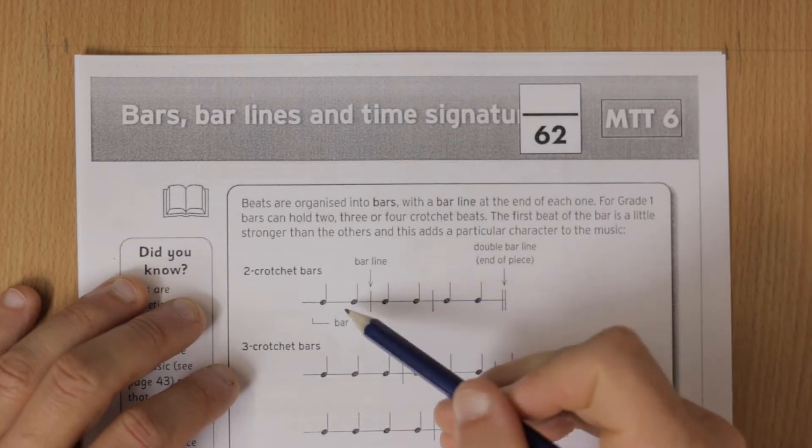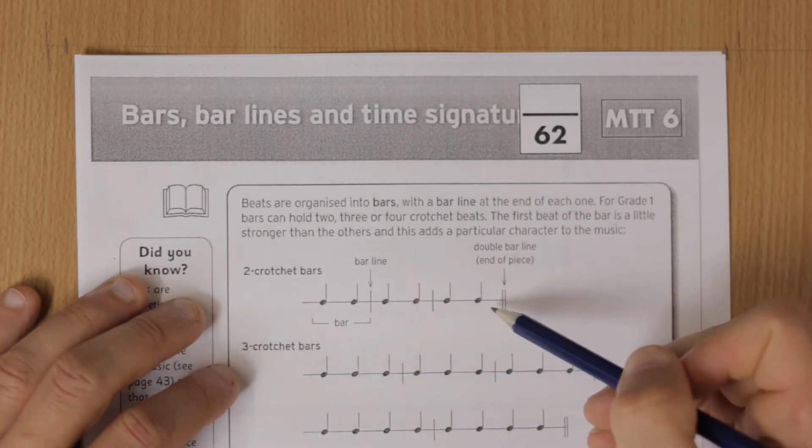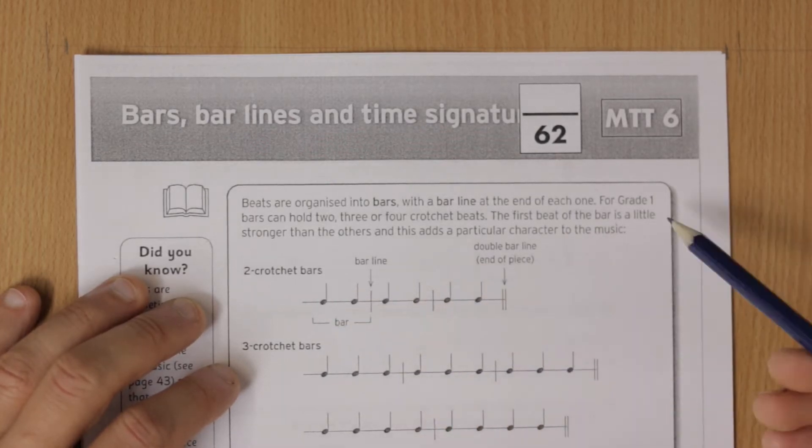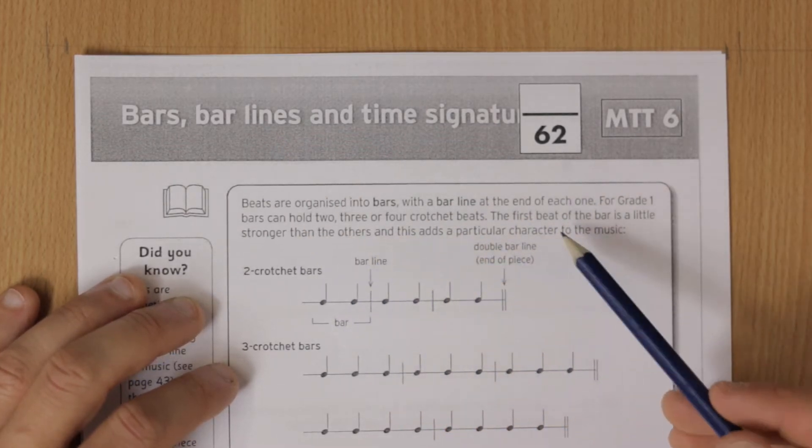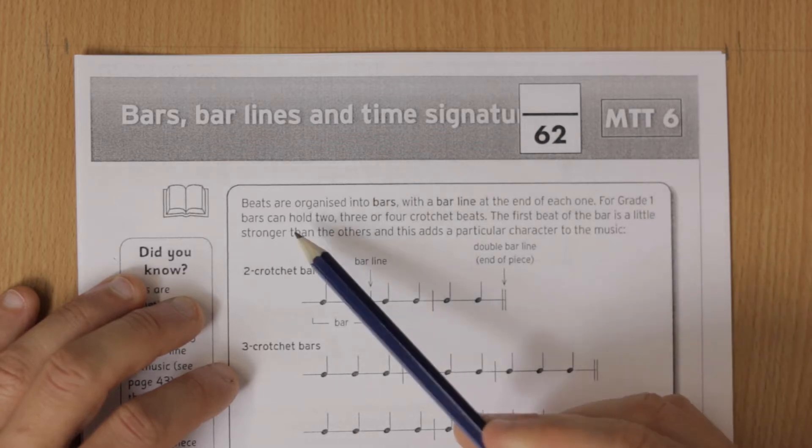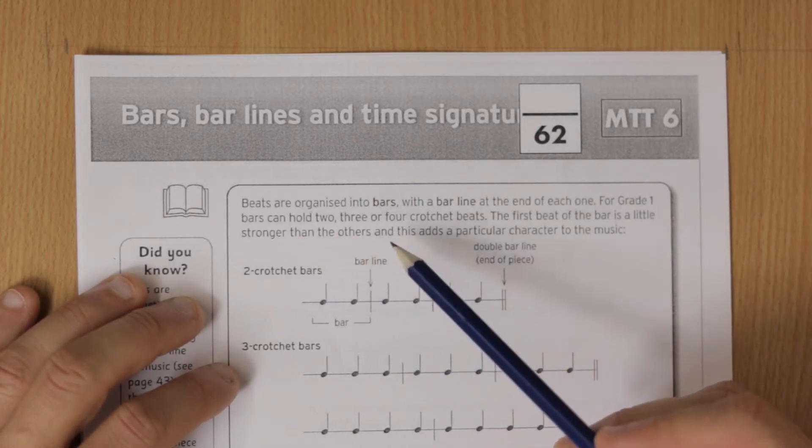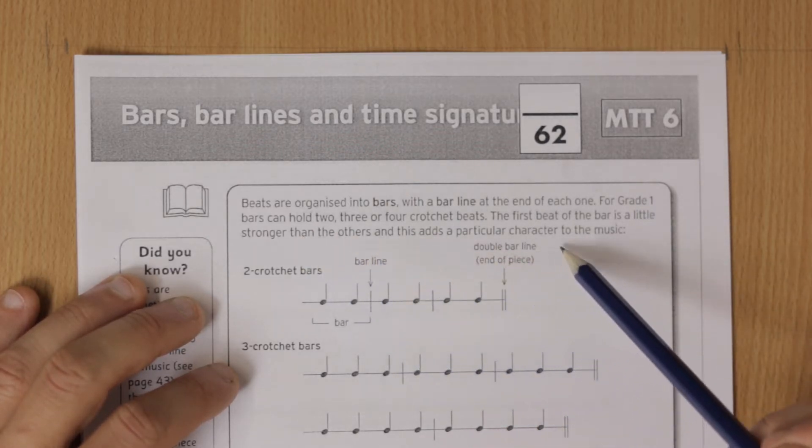We've got bar one, bar two, bar three - three bars divided with bar lines. For grade one, bars can hold two, three, or four crotchet beats. The first beat of the bar is a little stronger than the others, and this adds a particular character to the music.